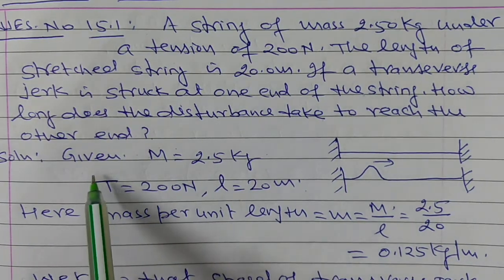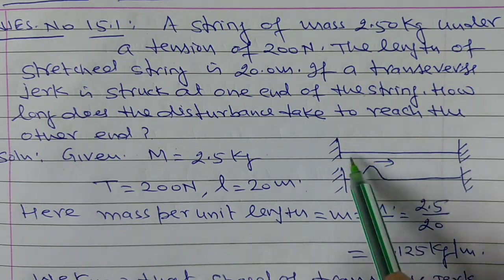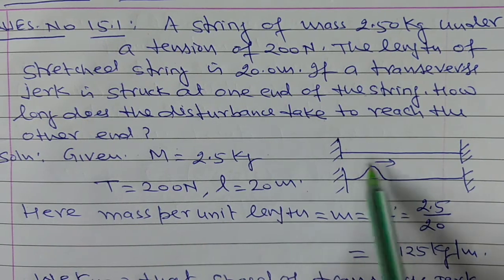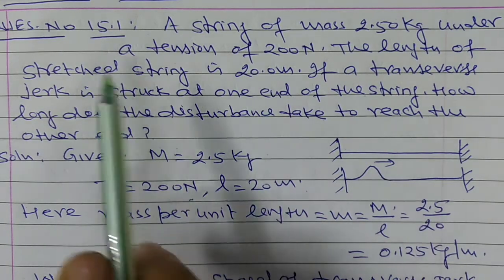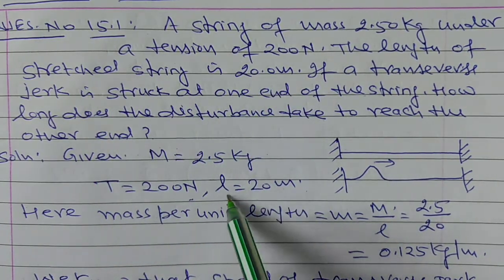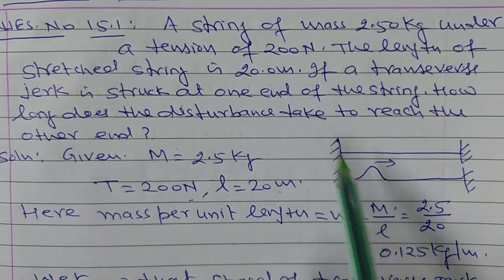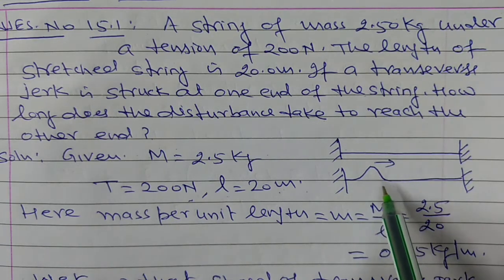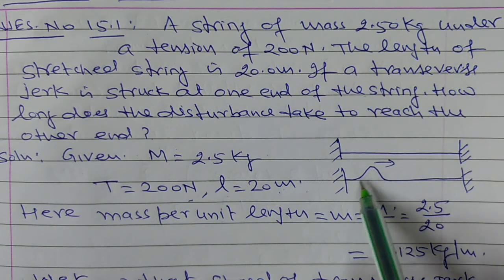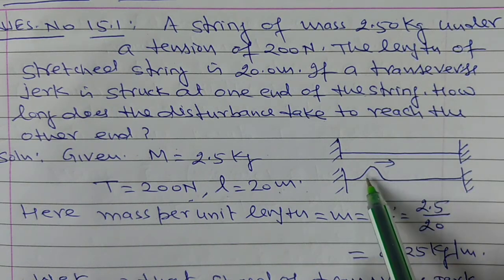In this question given that the mass of the string is 2.5 kg, suppose ye hai hamari ek string, its mass is 2.5 kg and this is under a tension of 200 N and the length of this stretched string is 20 m. So this L is equal to suppose 20 m. If a transverse jerk is struck at one end, here is a jerk produced, a disturbance produced, right?